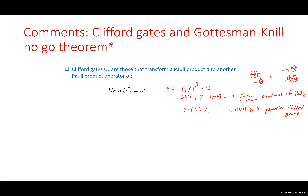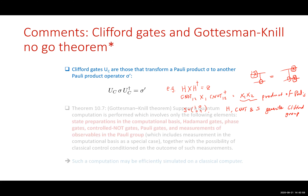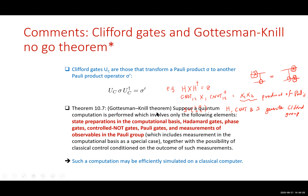The key point is that if we construct a quantum computer using only state preparation in the computational basis, Hadamard gate, H phase gate, CNOT, and Pauli measurement in the Z basis — unfortunately, such a quantum computer involving only these elements can be efficiently simulated on a classical computer. So that's a no-go.